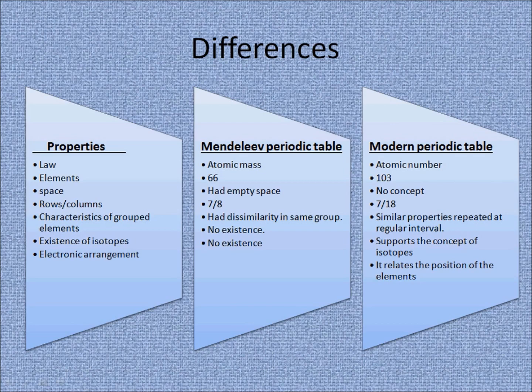Regarding isotopes: the order of elements in Mendeleev's periodic table was based on atomic masses, while the modern periodic table is based on atomic number. All isotopes of an element have the same atomic number, so they should be grouped together in the same group of the periodic table. This grouping of isotopes was absent in Mendeleev's periodic table, whereas the modern periodic table supports this fact by classifying elements based on atomic number rather than atomic mass.